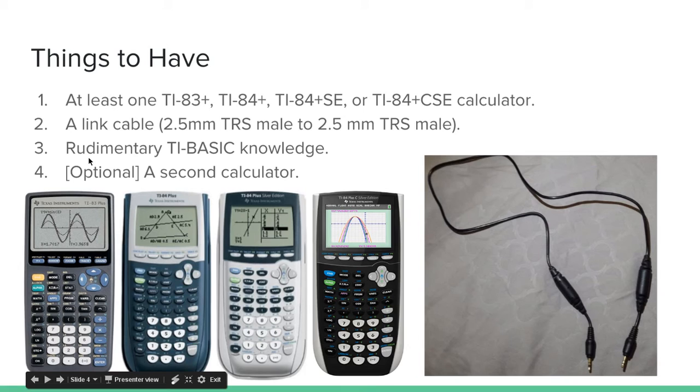You also need a link cable. If you don't have a link cable, this is what mine looks like. You can find them on Amazon, they're pretty cheap. They're called 2.5mm TRS-Male cables. You can just look up on Amazon and get you one, they're pretty cheap.